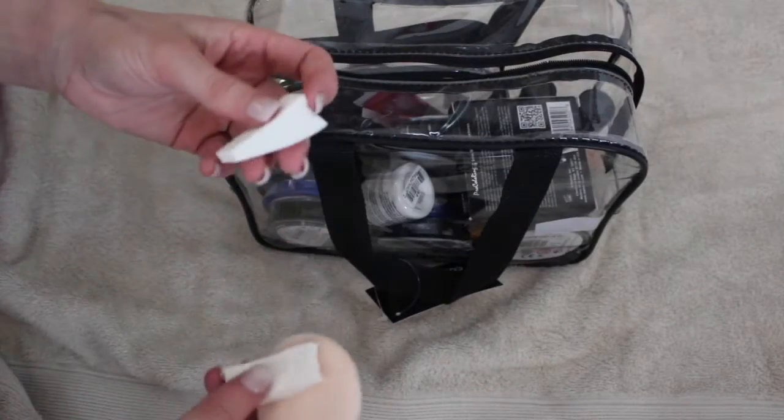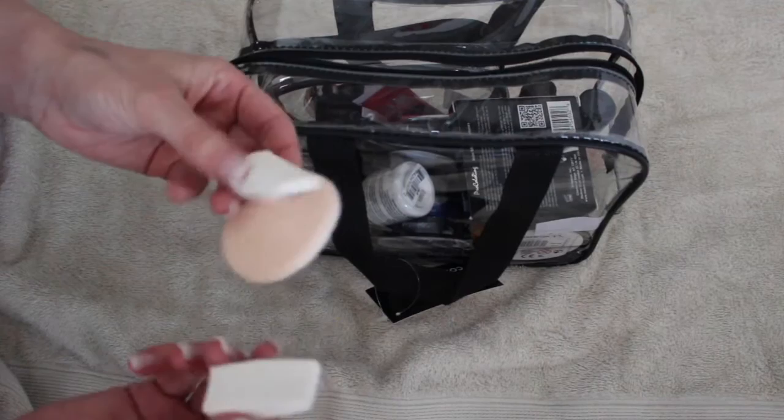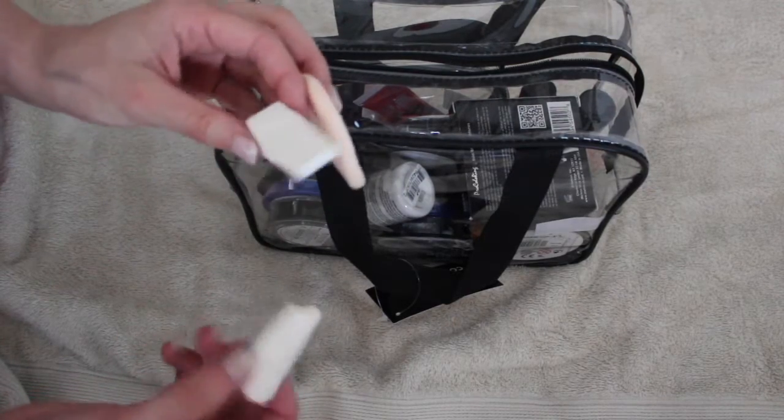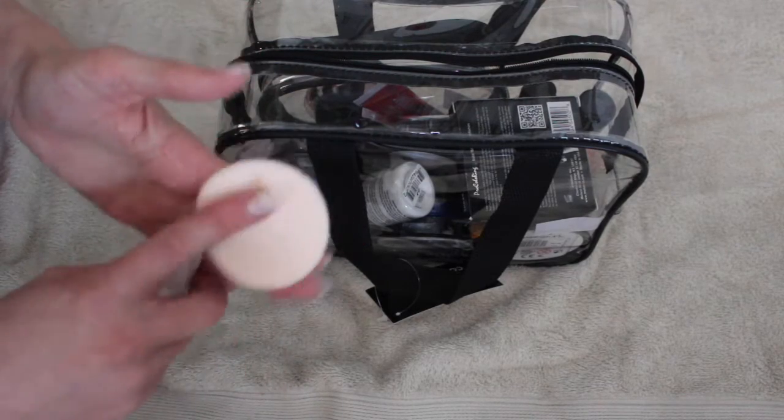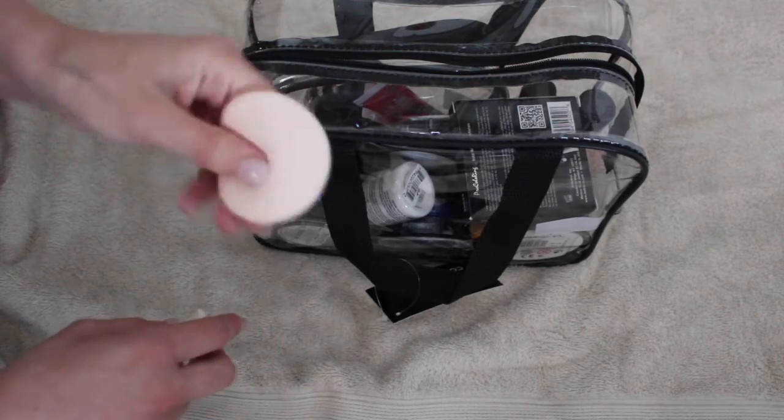I have three little makeup sponges. I use one for liquid latex and normally one for white face paint just hanging around, so I've got them spare. Then this I use for setting face paint down.